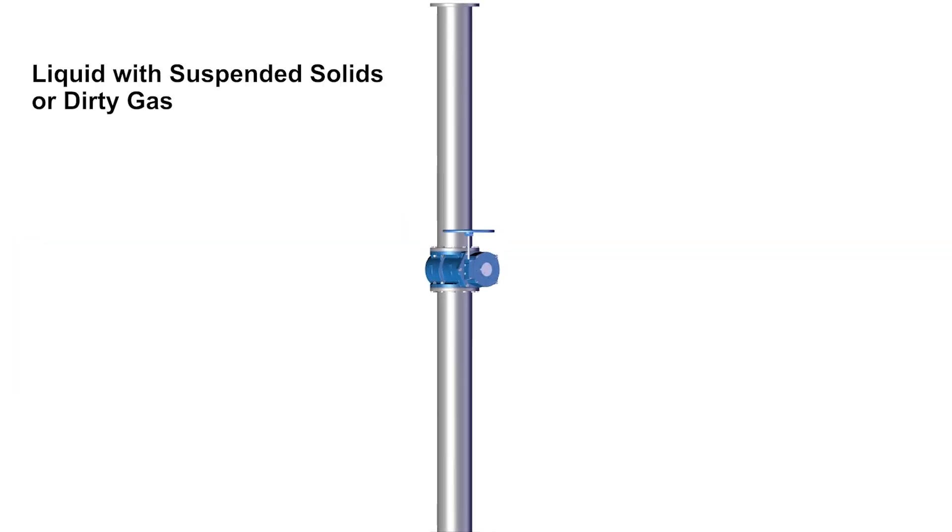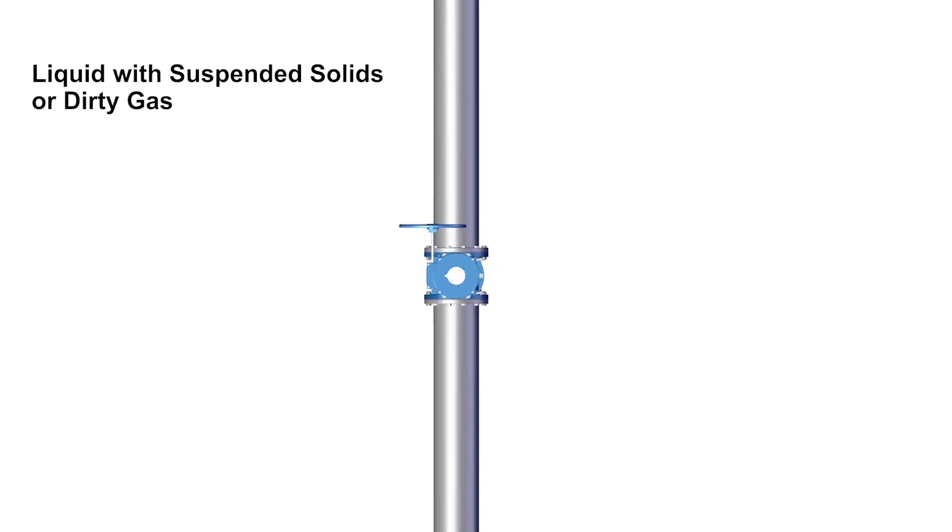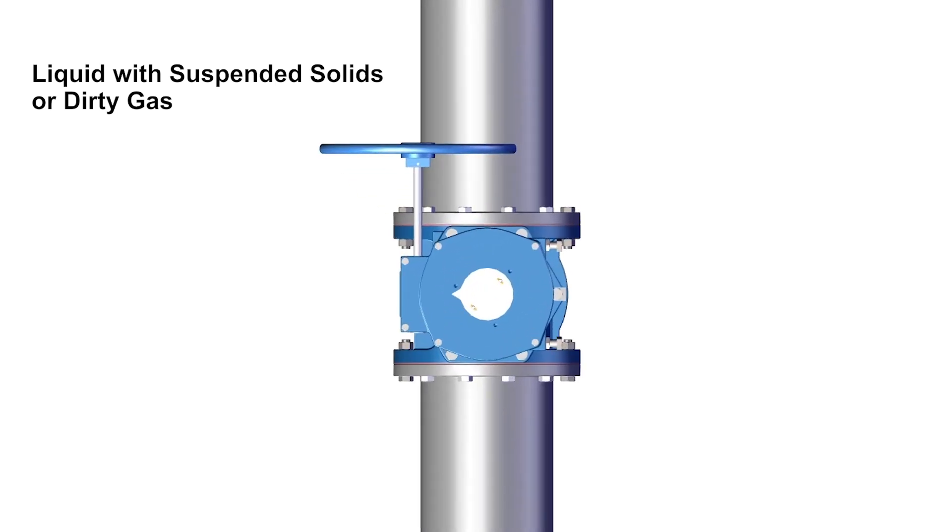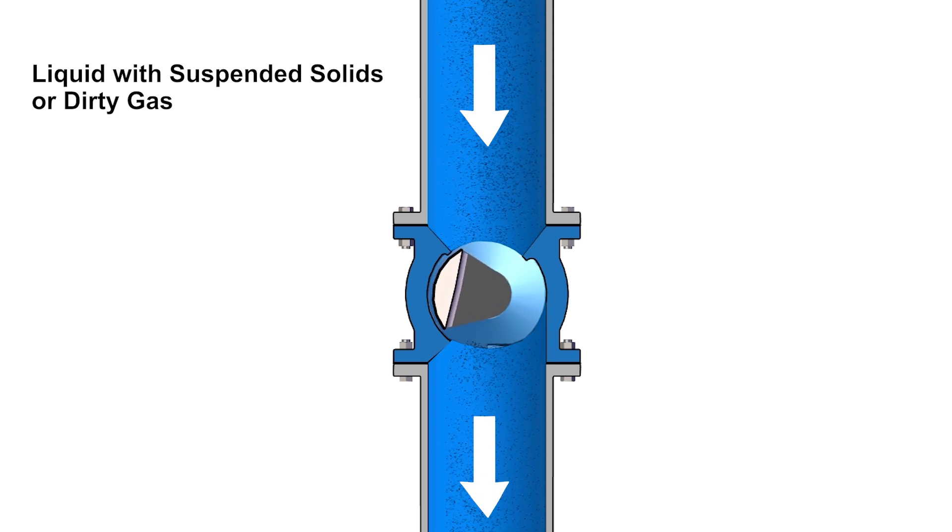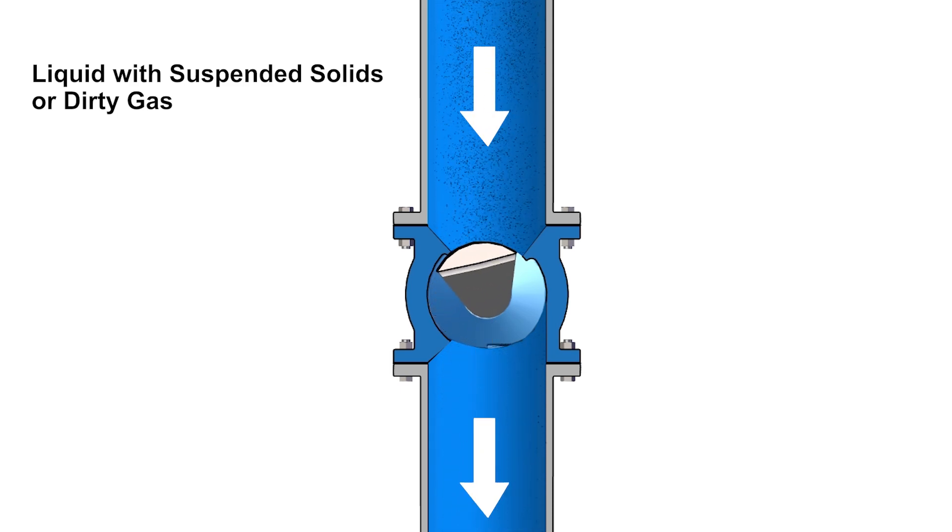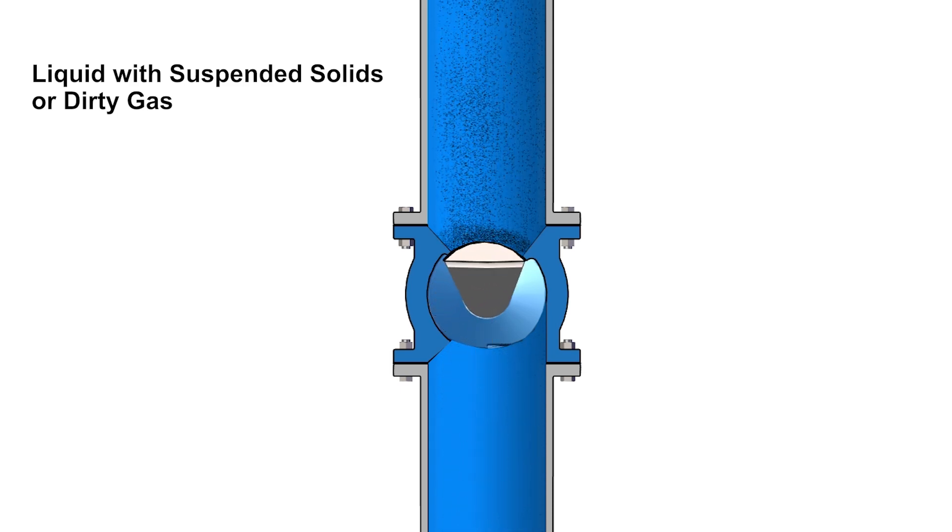In situations where the pipeline media contains suspended solids or a dirty gas, consideration should be given to what happens to the solids when the valve is closed and flow is stopped. For vertical installations, the seat side of the valve should always be installed upwards to keep solids from settling into the body cavity when the valve is closed.